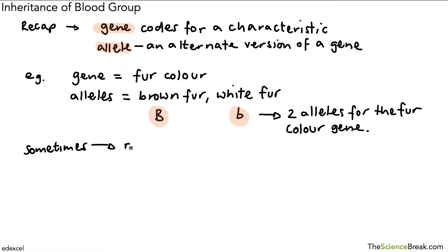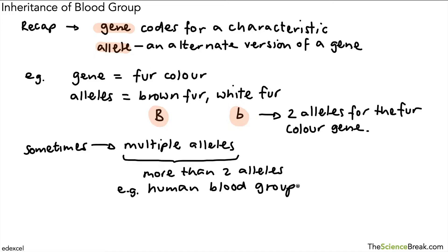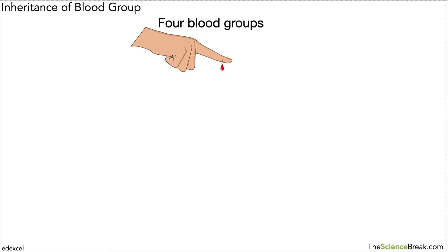This is not always the case. Let's switch to humans. Sometimes we have multiple alleles — that's when we have more than two alleles for a gene. A common example is human blood groups, where there are more than two alleles. So let's take a look at human blood groups.